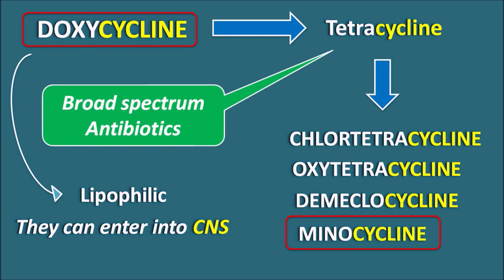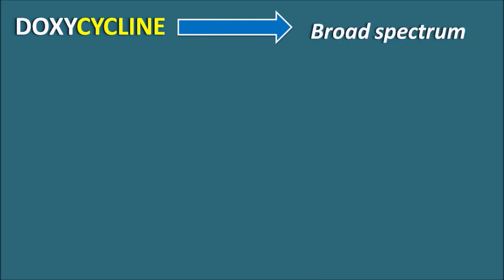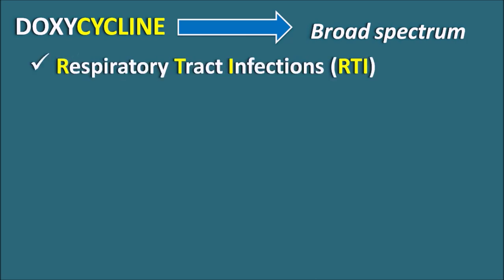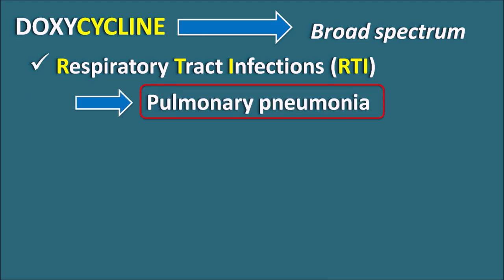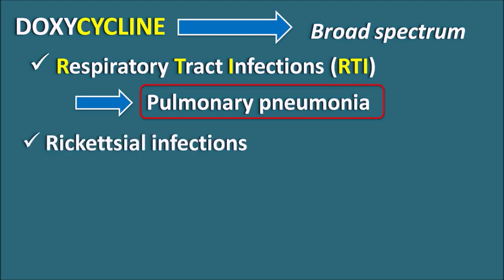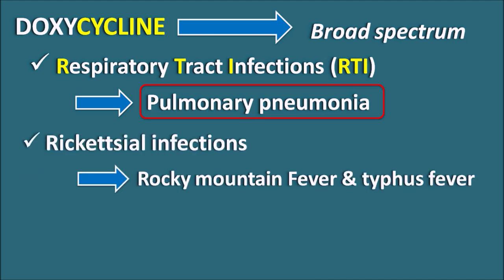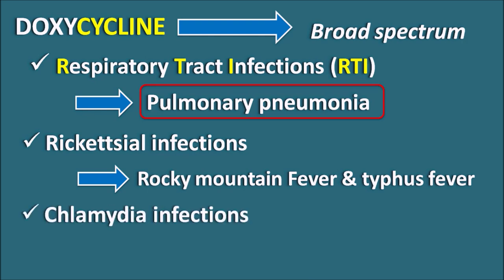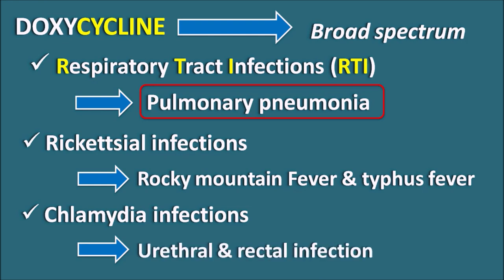Doxycycline is a broad spectrum antibiotic that can be used in a variety of infections. Particularly, it can be used in respiratory tract infections (RTI), specifically to treat pulmonary pneumonia caused by Mycoplasma pneumoniae. This drug is also used in rickettsial infections, which may produce Rocky Mountain fever and typhus fever, as well as chlamydial infections which produce STD infections like urethral and rectal infections.